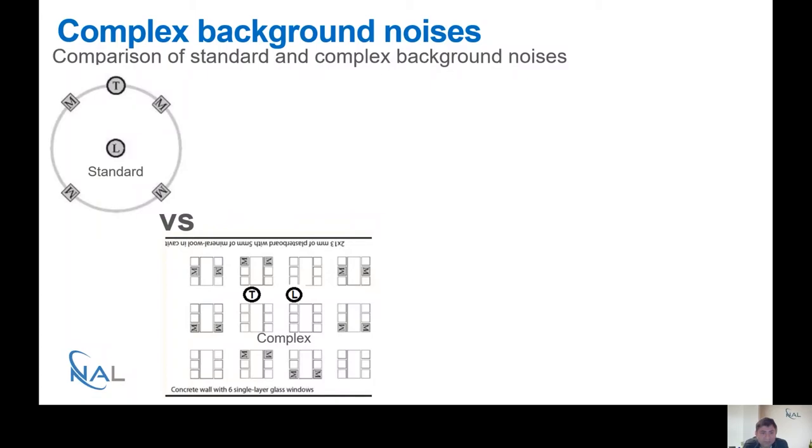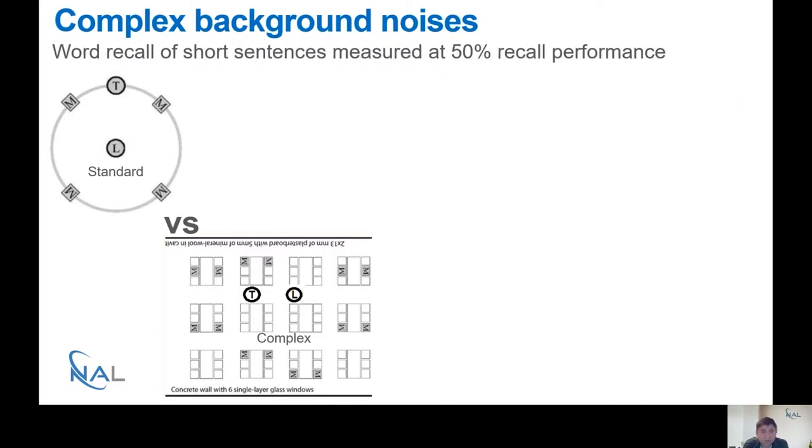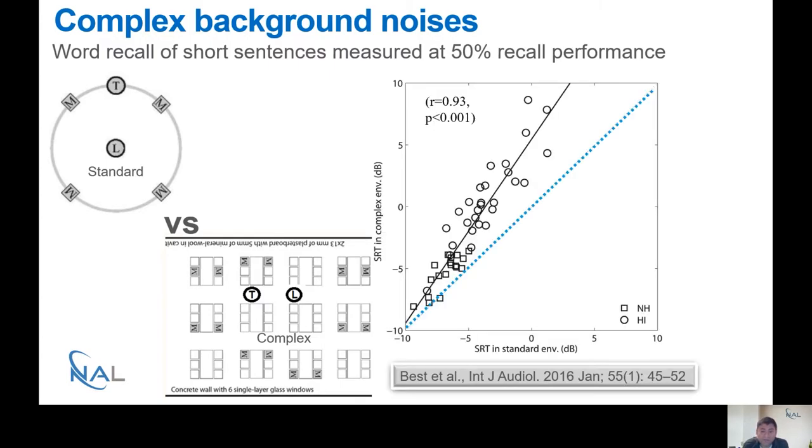How can we compare the two environments? To be able to do so, we need to recruit participants. So we have gone ahead and recruited a number of normal hearers and hearing impaired participants to conduct an experiment. What we're really trying to do is try to understand the ratio between the target and the noises in such a way that the participants can only recall about 50% of the sentences being presented to them in the two environments. The figure on the right shows the results. The x-axis shows the results for the background noise in the standard condition and the y-axis in the complex background noise condition. The dotted line represents the unity between the two. The squares represent the results from the normal hearers and the circles for the hearing impaired listeners.